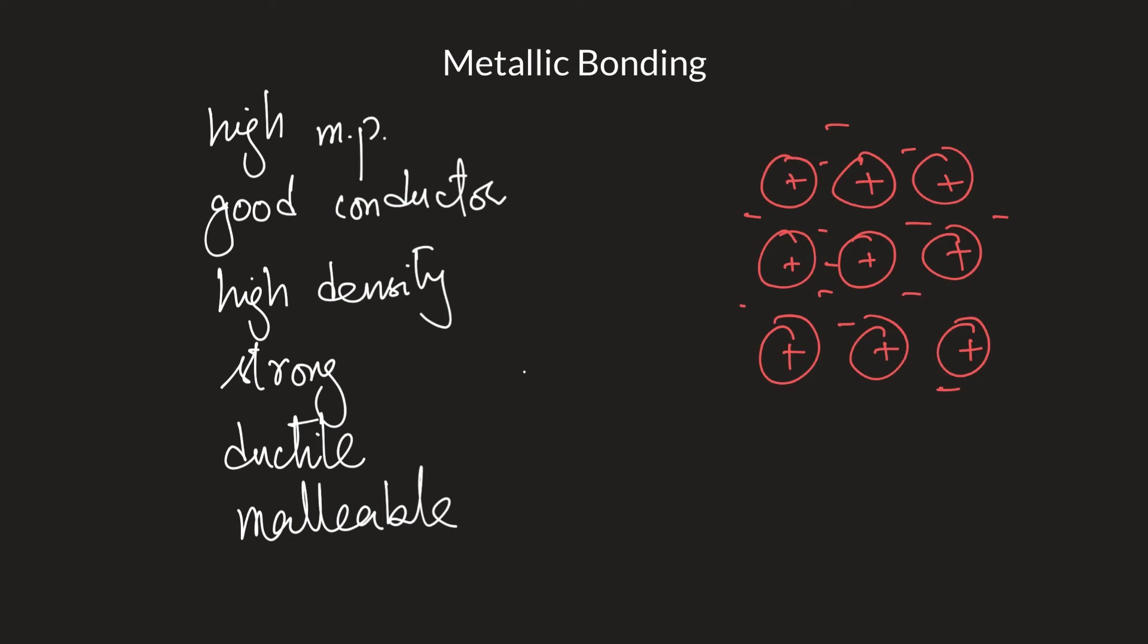And what happens is that all of these positive ions are pulling strongly on all the negative electrons. And these electrons are so numerous that we say that we have sea of delocalized. Again that's a term that shows that electrons are no longer local to their own atom. They are moving around sea of delocalized electrons. And there's layers of cations.